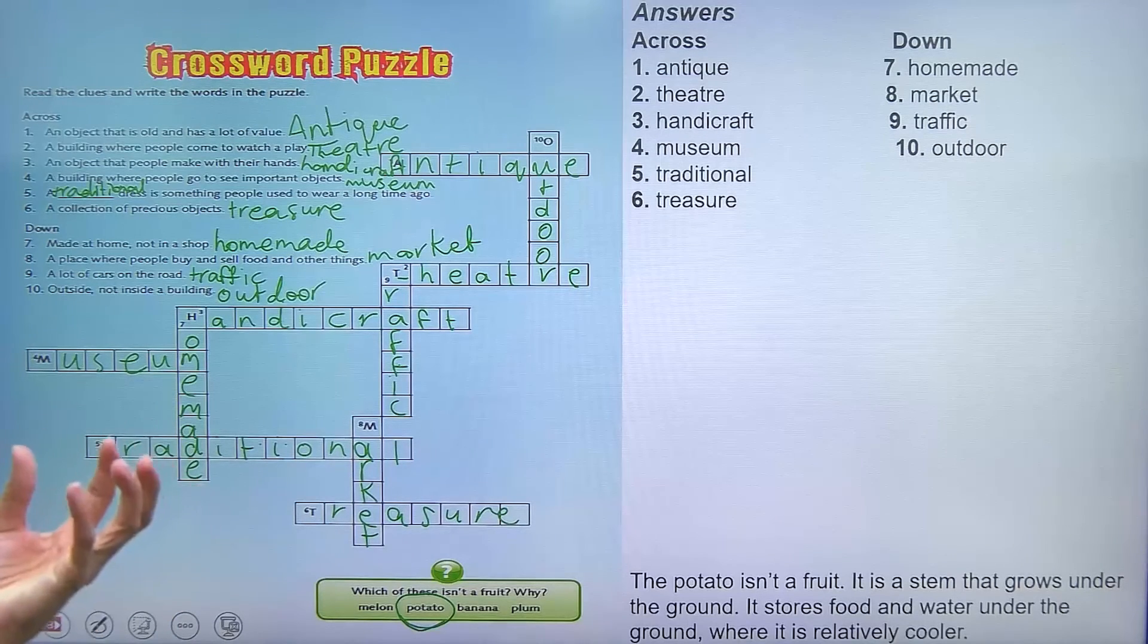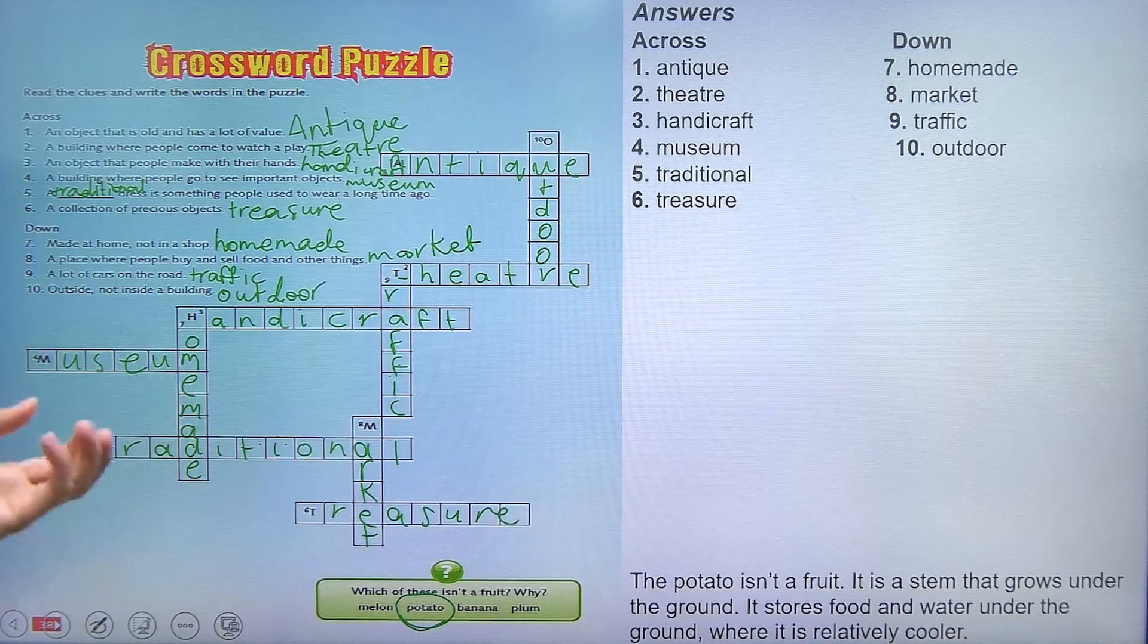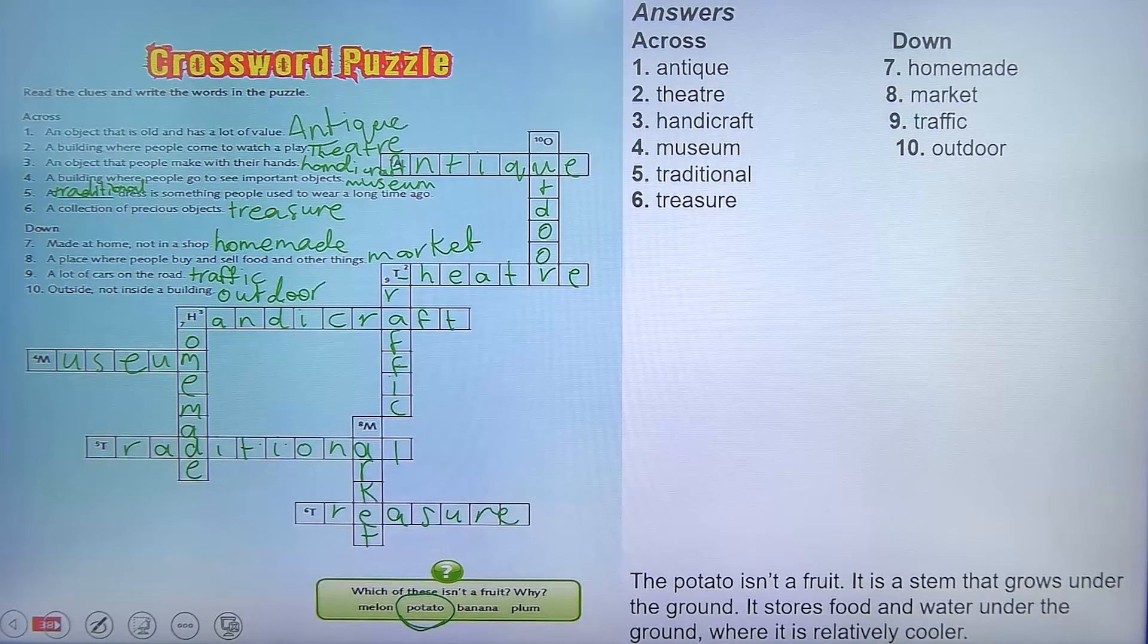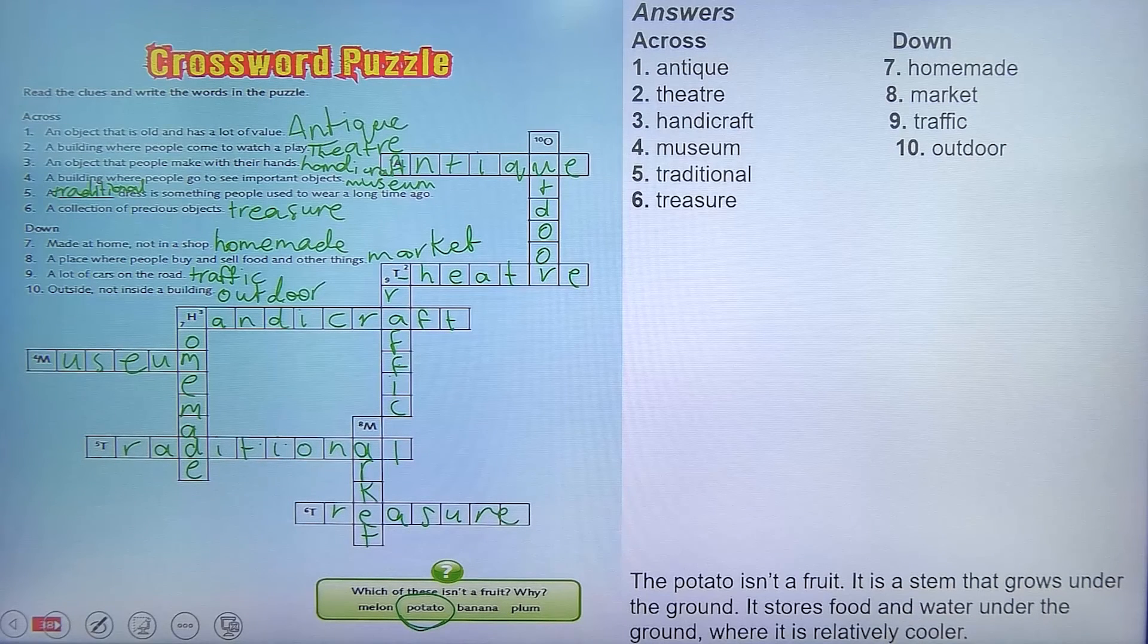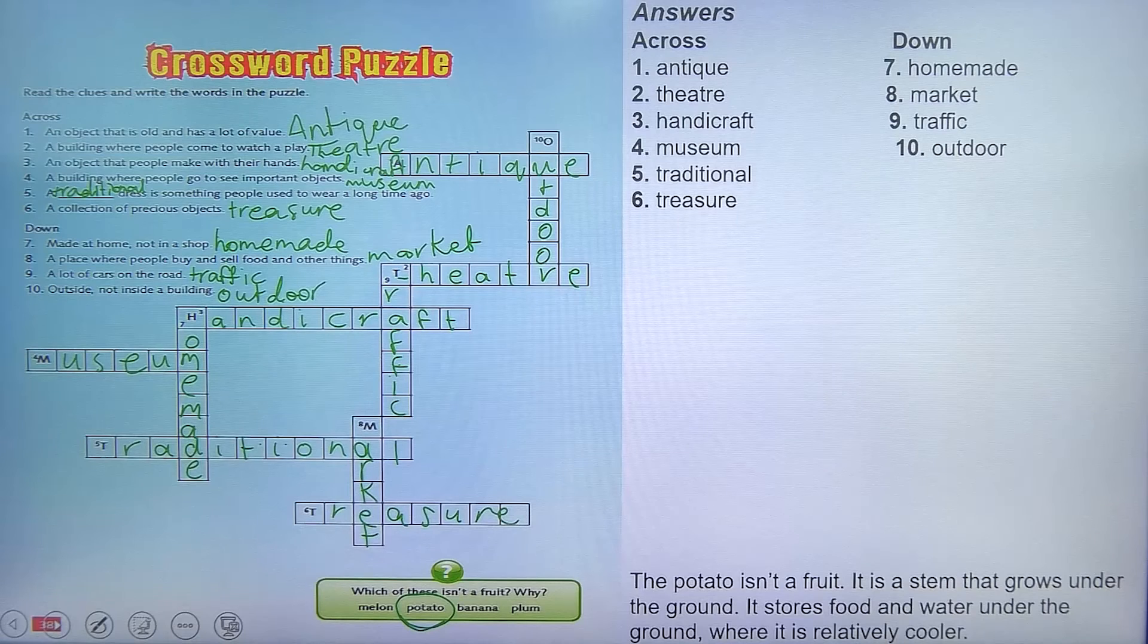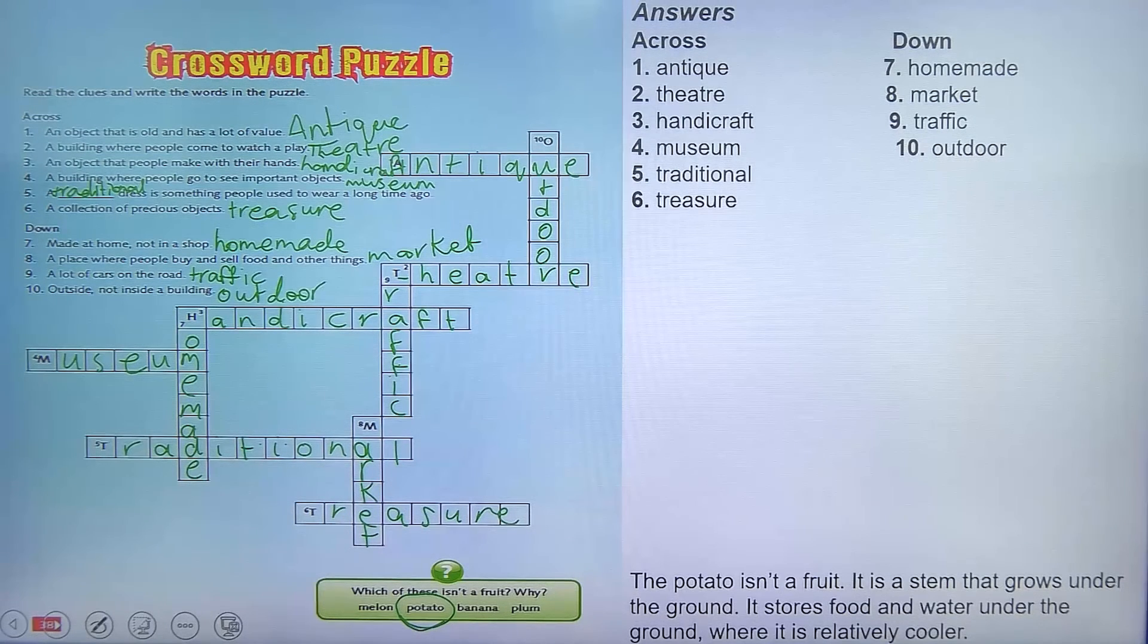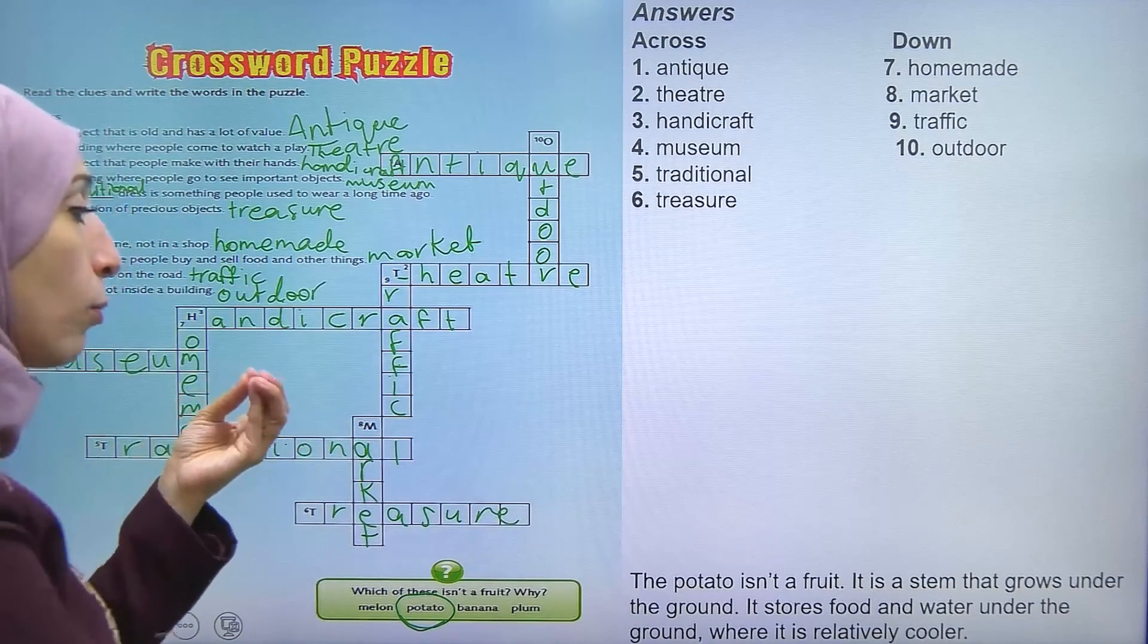The potato isn't a fruit. It's a stem that grows under the ground. It stores food and water. It stores food and water because the new tuber will map under the ground where it is relatively cooler, and it will be cooler. So it grows under the ground.